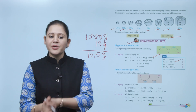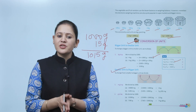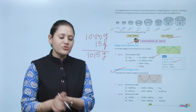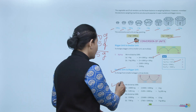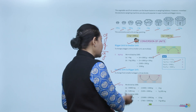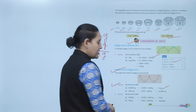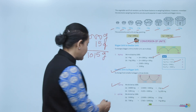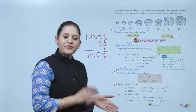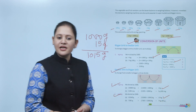Smaller unit to bigger unit: to change from a smaller unit to a bigger unit, we divide. Milligram to gram: divide by 1000. So 14,000 milligrams equals 14 grams. Next, gram to kilogram: divide by 1000. So 15,000 grams equals 15 kilograms.